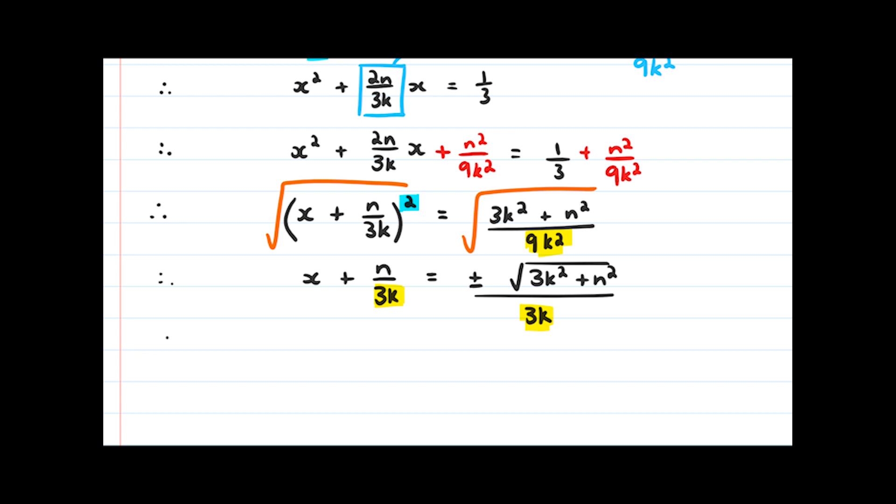And so we can finish off our question with x = (-n ± √(3k² + n²))/3k. And that is our final answer and our solution to the equation in terms of n and k.